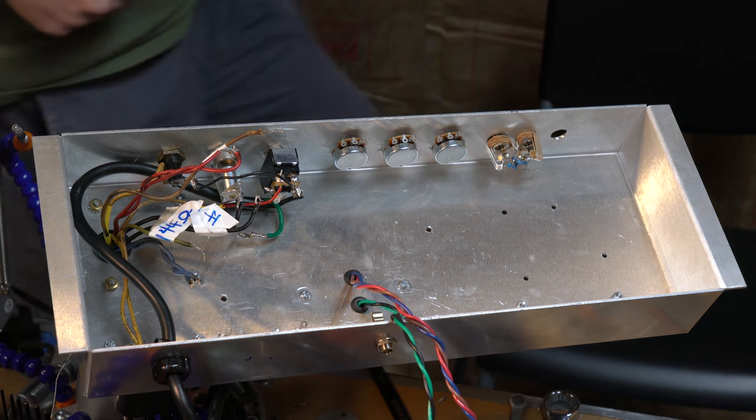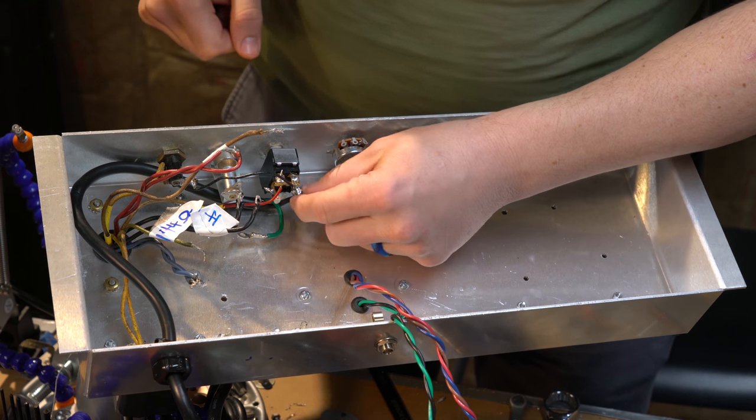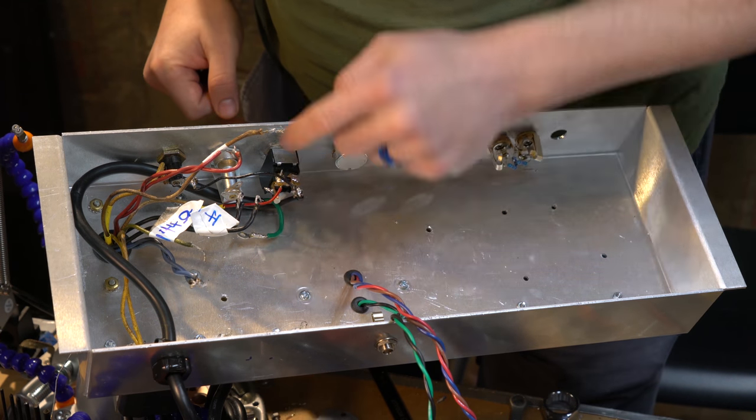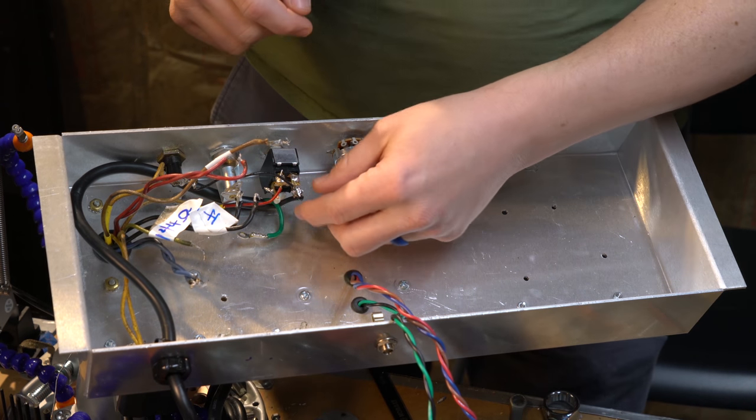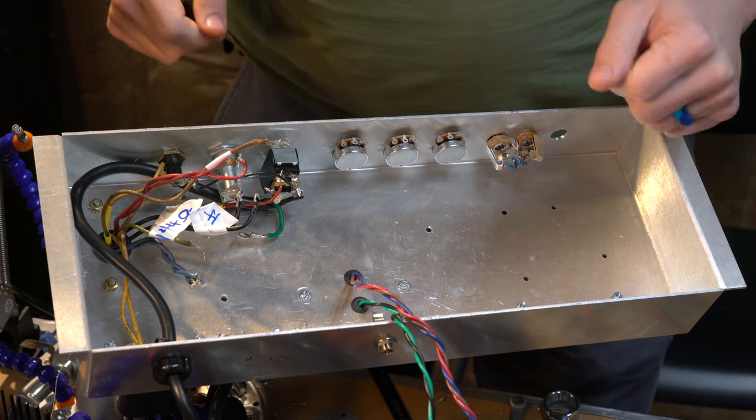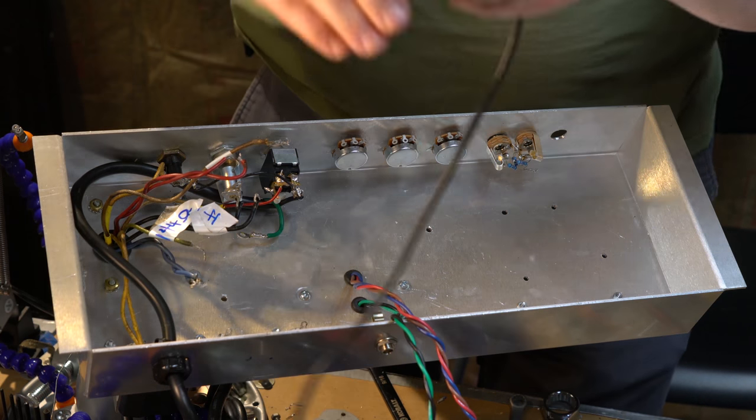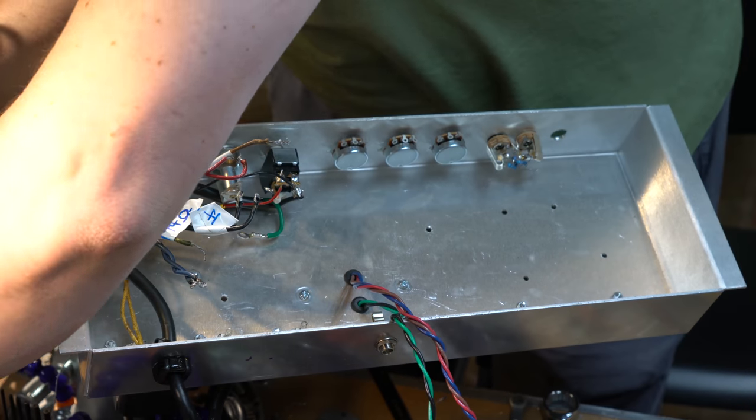Alright everybody, so I'm back at it again. Today I'm going to be resoldering this guy because when I was done with this one, I was able to get through the hole pretty well and have a nice solid physical connection. This one, not so much. I'm gonna desolder that, splay out the wire a bit, and then resolder it better so that I have what I feel is a more consistent connection there.